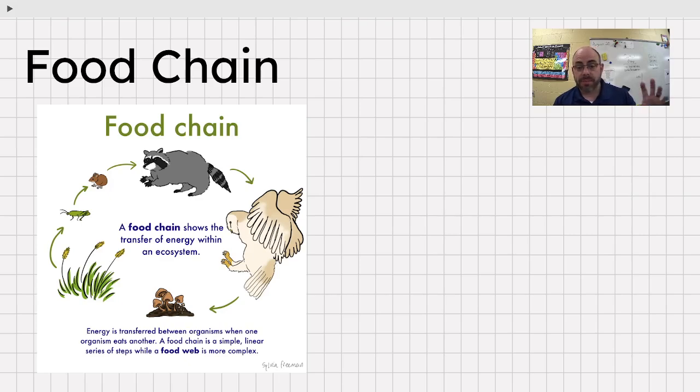Food chain, very simple linear sequence of organisms that's showing one path for the energy flow. The grasshopper eats the foxtails, the mouse eats the grasshopper, the raccoon eats the mouse, the hawk eats the raccoon, even though it looks like the hawk is going for the mushrooms here, it's not. The mushrooms should have arrows pointing to all of it because mushrooms are fungi and fungi are decomposers.